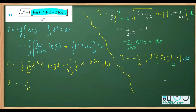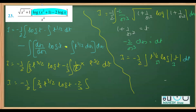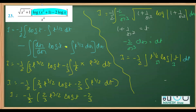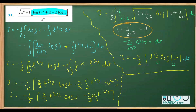So I equals −1/2 outside, times 2/3 · t^(3/2) · log(t) minus 2/3. On simplifying, the exponent 3/2 minus 1 gives 1/2, so by laws of exponents we get t^(1/2) dt. Now I equals −1/2 times [2/3 · t^(3/2) · log(t) minus 2/3 times the integration of t^(1/2), which is t^(3/2) times 2/3]. We can take out 2/3 · t^(3/2) as a common factor.